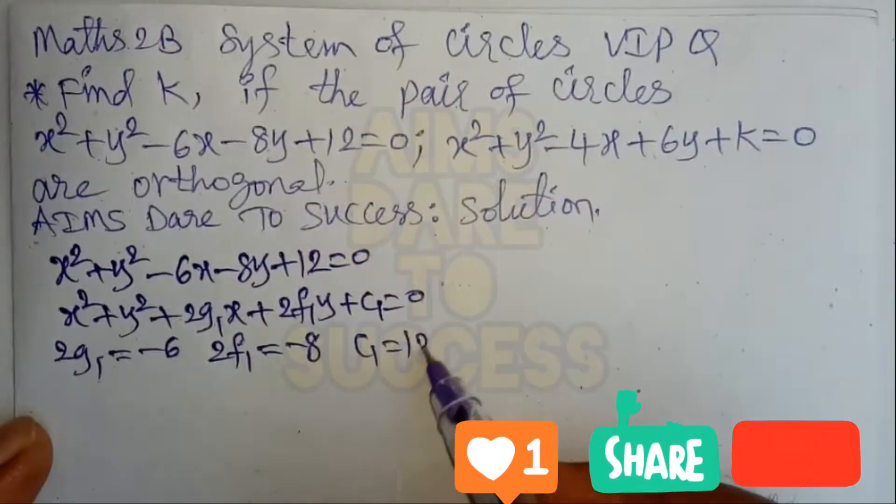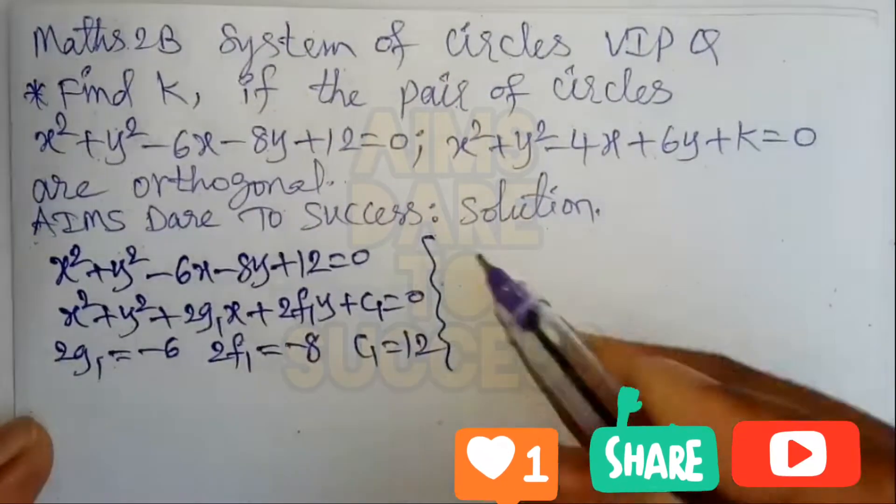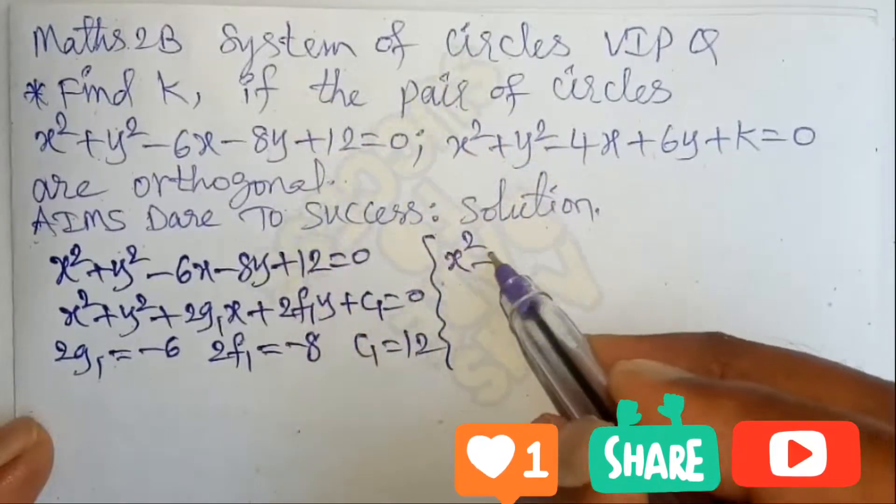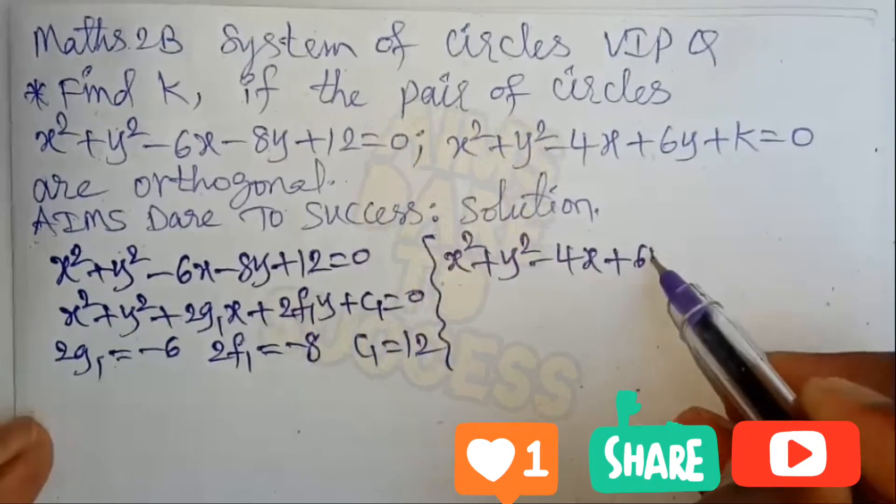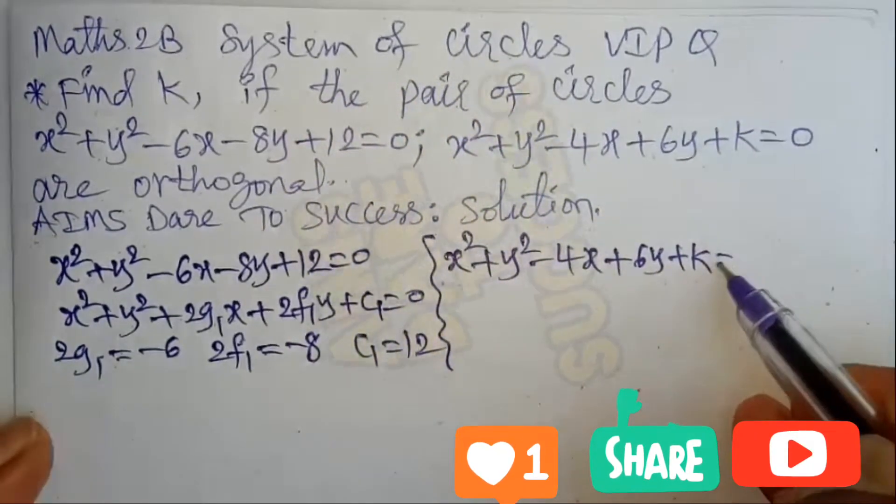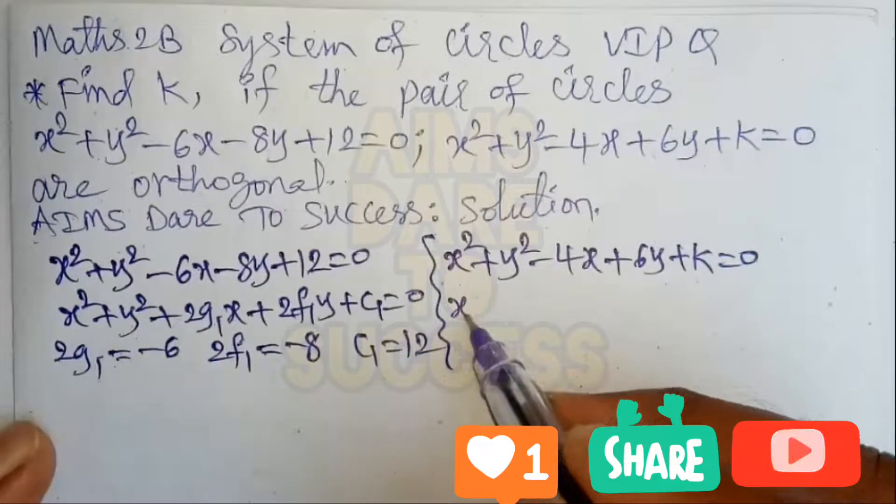Our second circle is x² + y² - 4x + 6y + k = 0. Comparing with standard equation of the circle x² + y² + 2g₂x + 2f₂y + c₂ = 0...